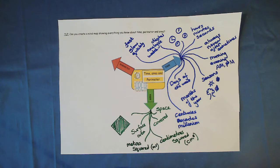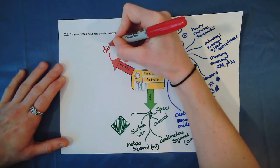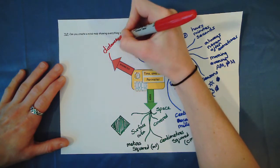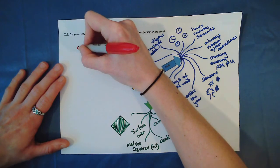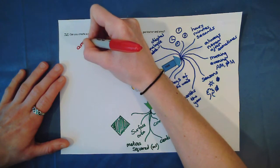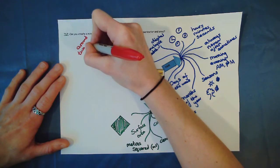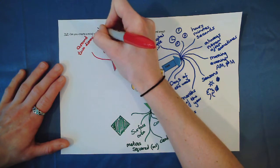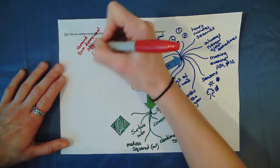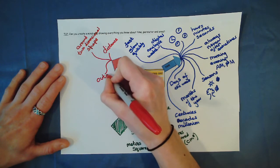Let's have a think about perimeter. So perimeter is the distance around the outside, around a two-dimensional shape. What did I just say? Around the outside. So we could put that on there.